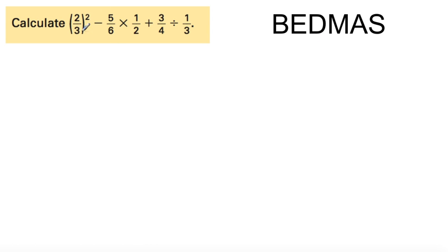So, first thing we have here, we've got brackets, we've got exponents. That's the B and the E. So if we have a fraction in brackets with an exponent of 2, all this is saying is 2 thirds times 2 thirds. So 2 thirds times 2 thirds is very simple. It works out to 4 ninths. So 2 times 2 is 4, 3 times 3 is 9, and then we just carry everything over. So 5 sixths times 1 half plus 3 quarters divided by 1 third.